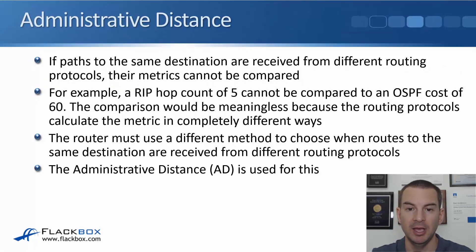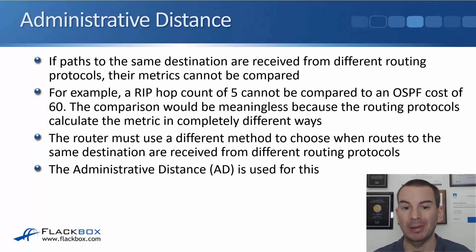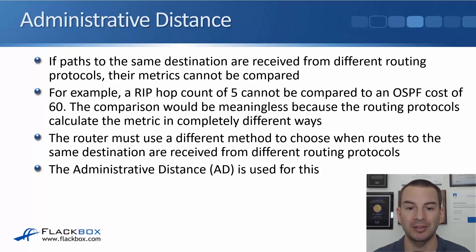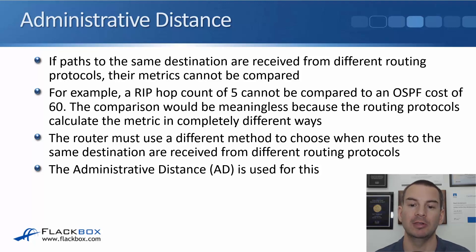If paths to the same destination are received from different routing protocols — if for some reason your organization is running multiple routing protocols and a router receives routes to the same destination from those different routing protocols — then it can't compare their metrics to each other. For example, a RIP hop count of five can't be compared to an OSPF cost of 60. That comparison would be meaningless because the routing protocols calculate the metric in completely different ways. It's like they're talking foreign languages, so you can't compare one routing protocol metric to another.